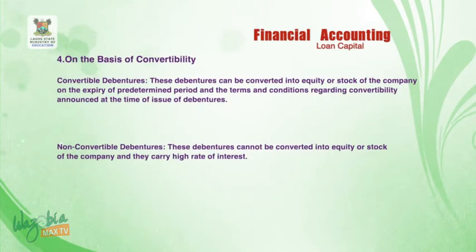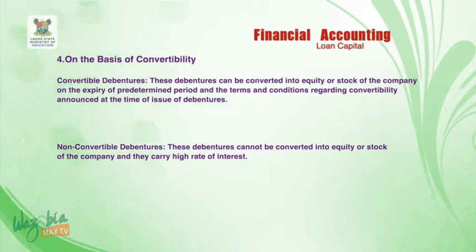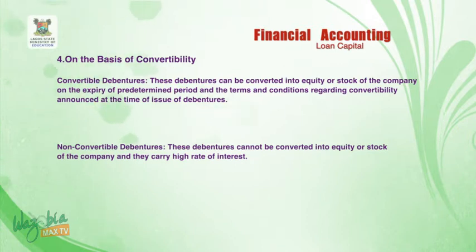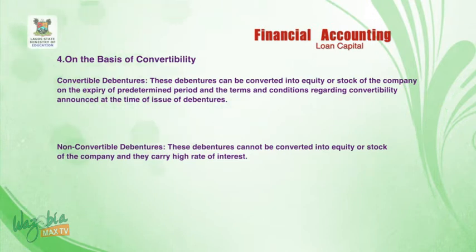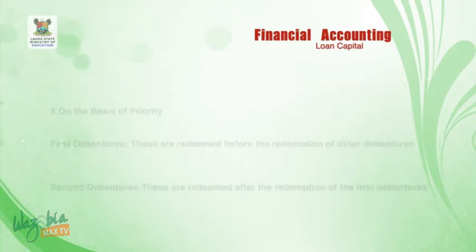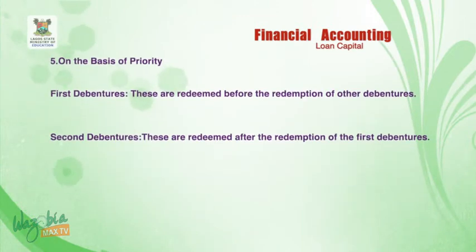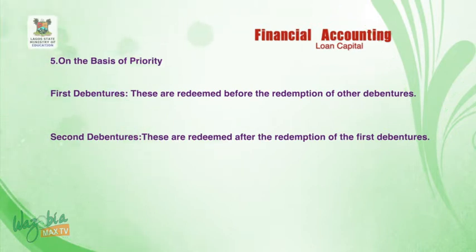On the basis of convertibility, we have convertible debentures and non-convertible debentures. Convertible debentures can be converted into equity or stock of the company on the expiry of a predetermined period; the terms and conditions regarding convertibility are announced at the time of issue. Non-convertible debentures cannot be converted into equity or shares of the company and they carry high rates of interest. On the basis of priority — the fifth and last classification — first debentures are redeemed before the redemption of other debentures, while second debentures are redeemed after the redemption of the first debentures.